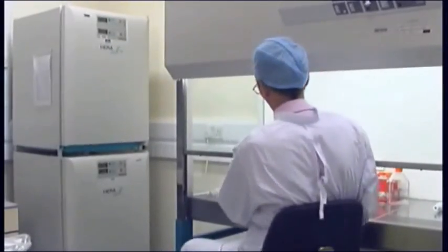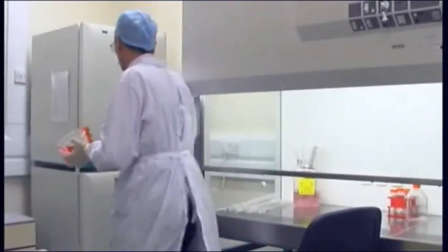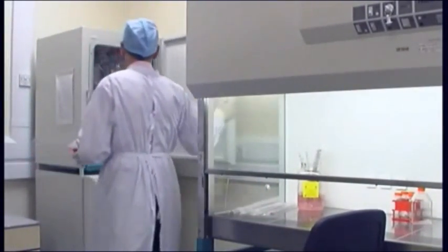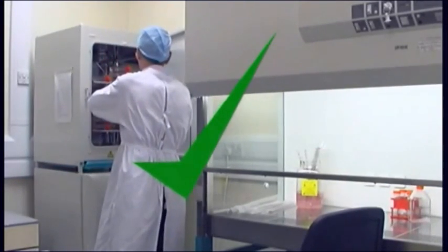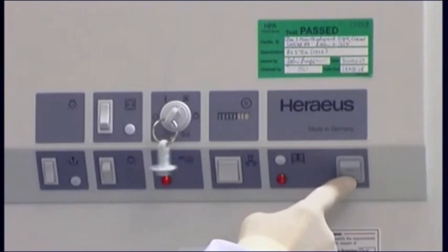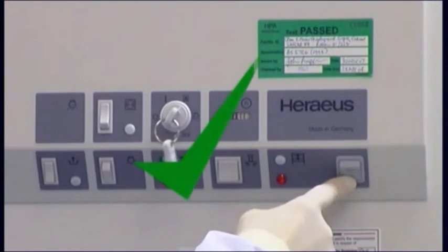On completion of work, remove all of the cultures for incubation after spraying their containers with 70% alcohol solution. Leave the cabinet on for 5 to 10 minutes before switching off. Alternatively, leave it running all of the time.